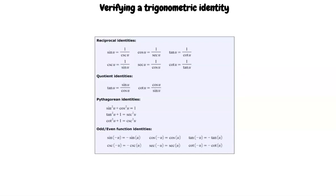These are the fundamental trigonometric identities that will be used in the proofs. You will need to determine whether each step uses rules from reciprocal identities, quotient identities, Pythagorean identities, or odd-even function identities.